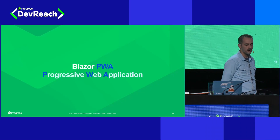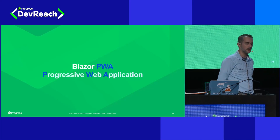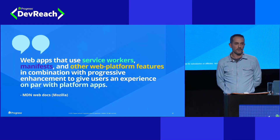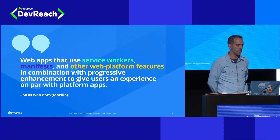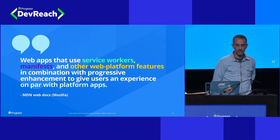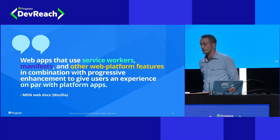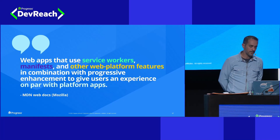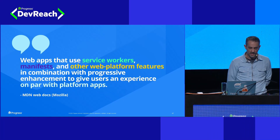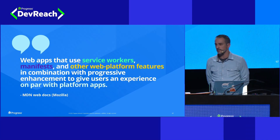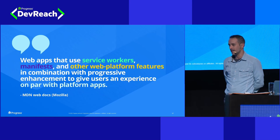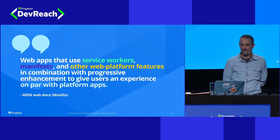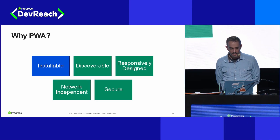We can explore another option called a Progressive Web Application. We can build a PWA with Blazor. PWAs are web applications that use service workers, manifests, and other web platform features to create a desktop-like experience. Mozilla describes them as 'on par with platform apps' — on par with, not exactly 100% like platform apps. There's a little bit of marketing in there.